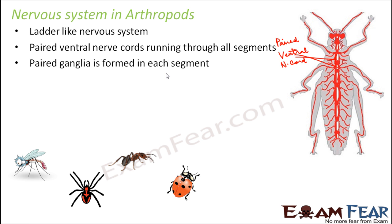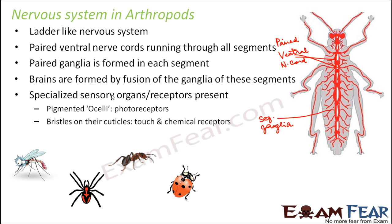Paired ganglia are formed in each segment — these are called the segmental ganglia. The brain is formed by the fusion of ganglia from the head segments. Specialized sense organs are present, such as pigmented ocelli which act as photoreceptors. Like eyes, the ocelli are sensitive to light and are located in the head region.